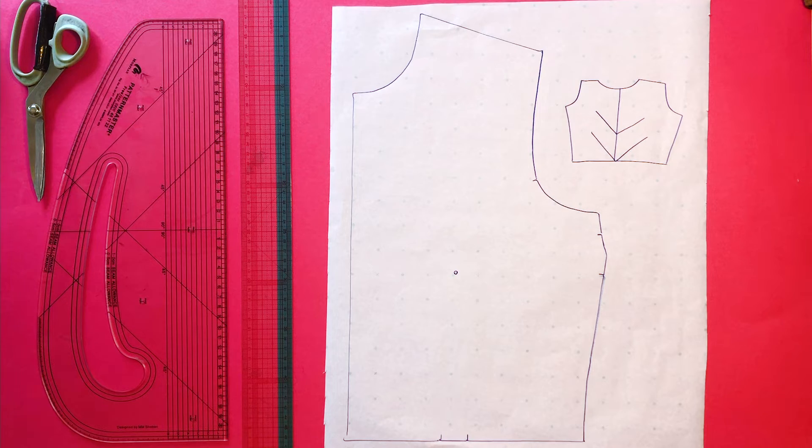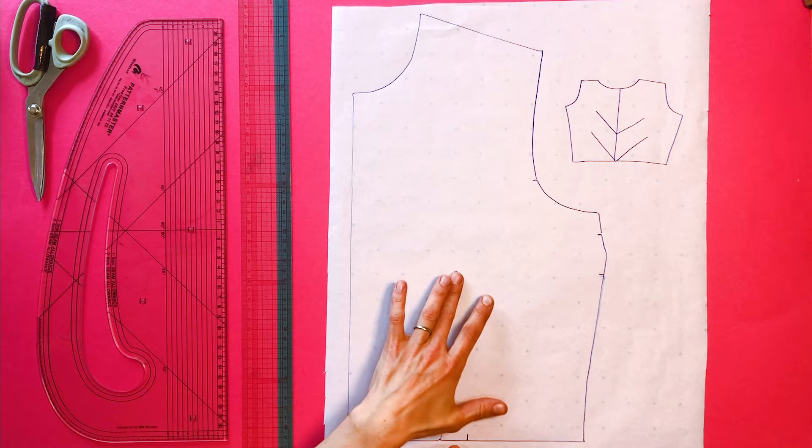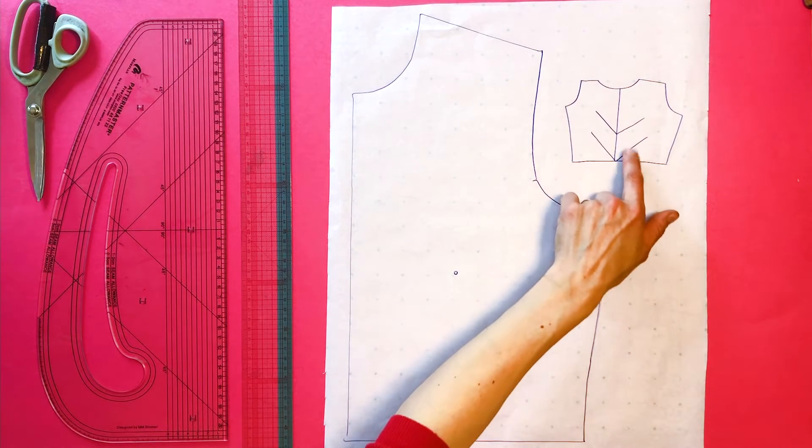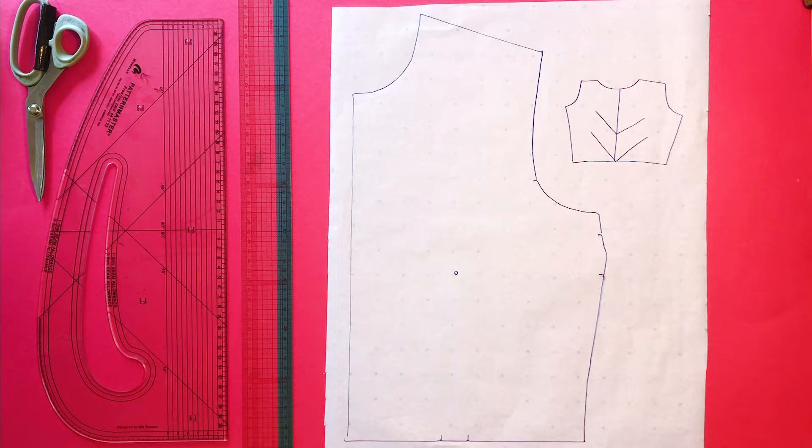To achieve this v-shape, you can use both the bust darts and the waist darts. We're going to do a little bit of cheating to get the parallel lines, but it will still work. You just call it innovative pattern cutting rather than cheating.